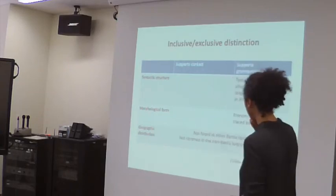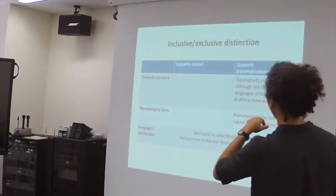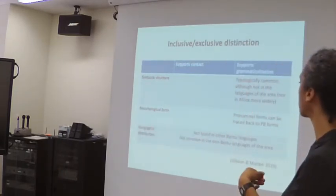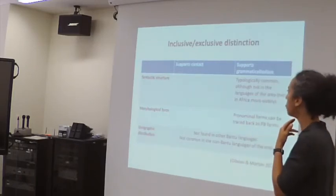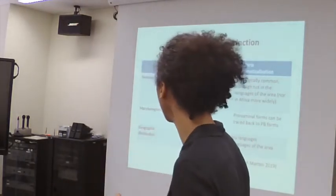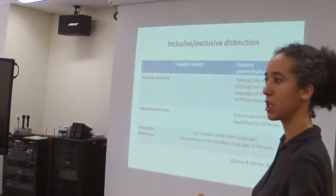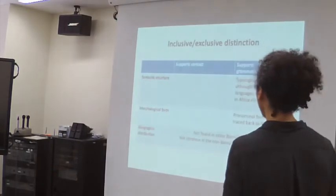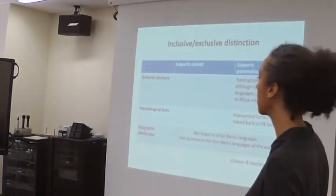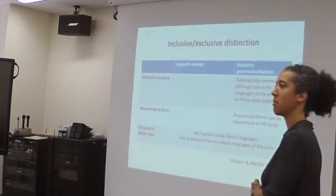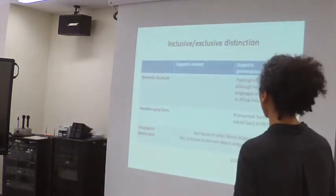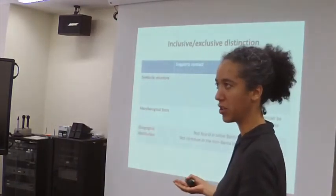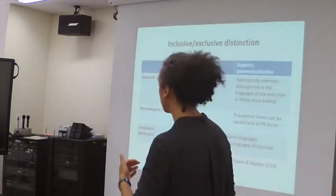Applying our chart again — syntactic structure, morphological form, and geographic distribution. Typologically, inclusive-exclusive distinction as a concept is attested across the world. Morphological form can be mapped back onto proto-Bantu forms — this supports grammaticalisation, but not with these particular meanings as far as we know. Geographic distribution: not found in other Bantu languages which might support contact, but also not found in the non-Bantu languages of the area, weakly supporting grammaticalisation. This leaves us with the idea that it's a language-internal innovation — albeit with forms that can be traced back.